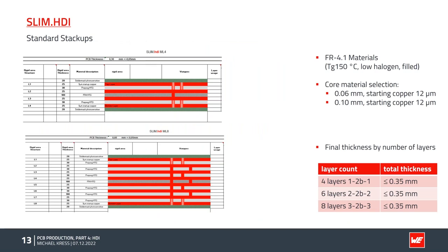The standard buildups you can find on our homepage. You can use 4-layer, 6-layer, or 8-layer configurations with stacked microwires on each layer. We always use FR4 materials with a Tg of 150 degrees, and the core material on the inner layer is 60 or 100 microns thickness. Regarding final PCB thickness: a 4-layer PCB with 1+2+1 build-up is thinner than 0.35 millimeters. A 6-layer is 0.4 millimeters, and the 8-layer is 0.6 millimeters. Different PCB signals for these are shown in this table.